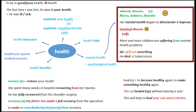For example: 'The last time I saw him he was in poor health,' which means he was ill or sick. On the right-hand side I have ailment, disease, illness, sickness, disorder — all synonymous nouns that talk about problems with your health. For example: 'Her mental health began to deteriorate.' Deteriorate is a very negative verb; the opposite would be improve. A terminal disease is a disease that would kill you.